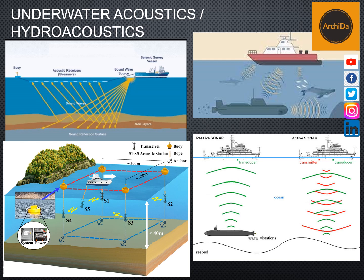Two types of technologies share the name sonar. One is passive sonar, which is essentially listening for the sound made by vessels. Active sonar is emitting pulses of sounds and listening for echoes. The ocean's own underwater frequencies have meanwhile been performing as mapping agents from the early 20th century onwards, when analog methods of surveying the ocean floor with weighted sounding lines were replaced by sonar.